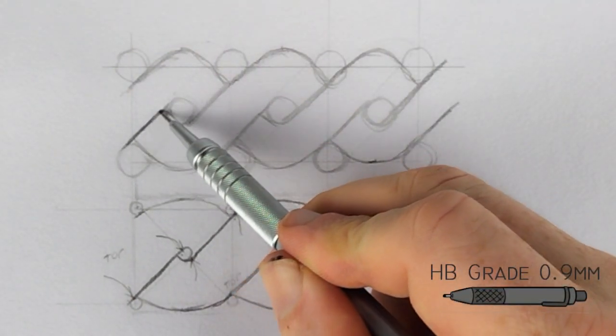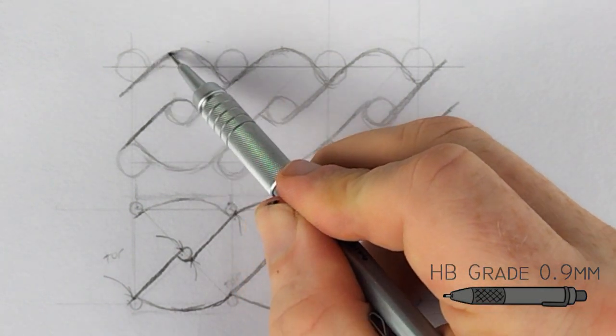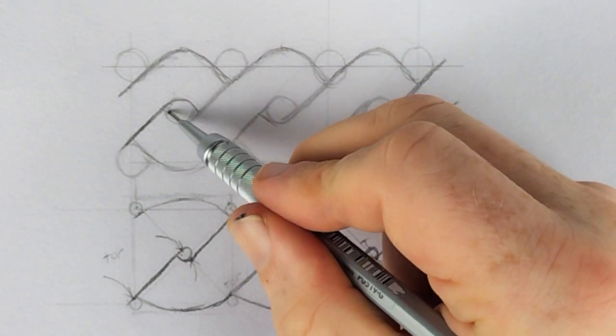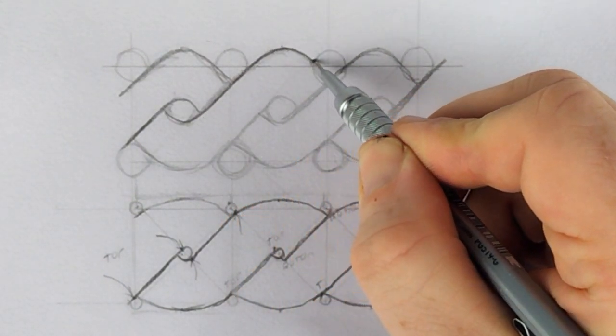I am now using a mechanical 0.9mm HB pencil to create a darker outline to the knotwork lines to give them more definition.